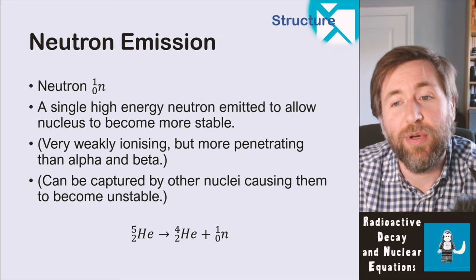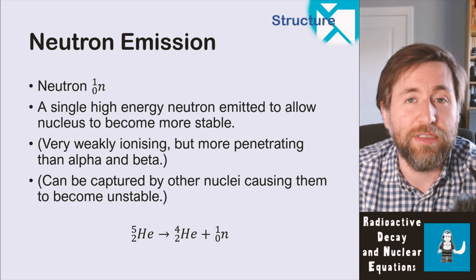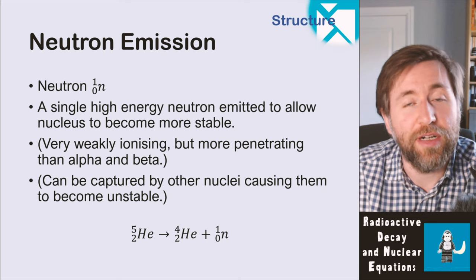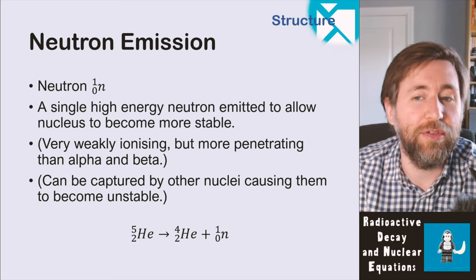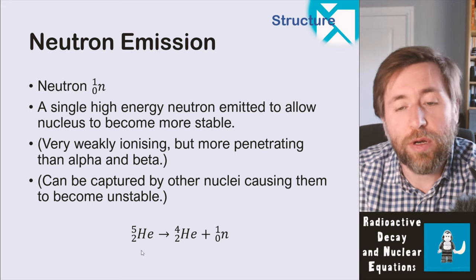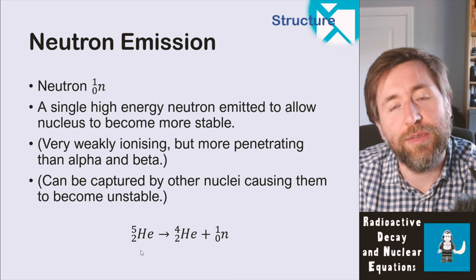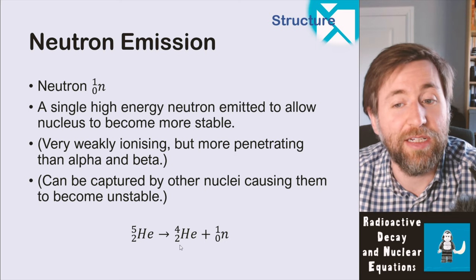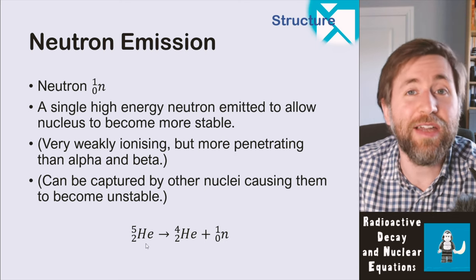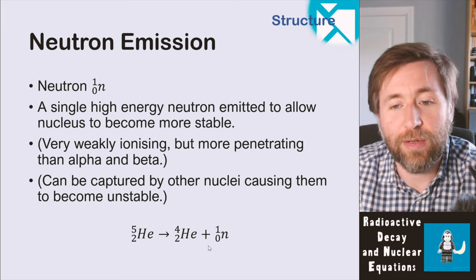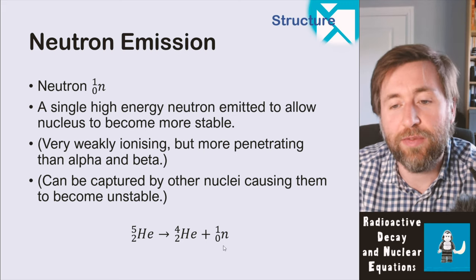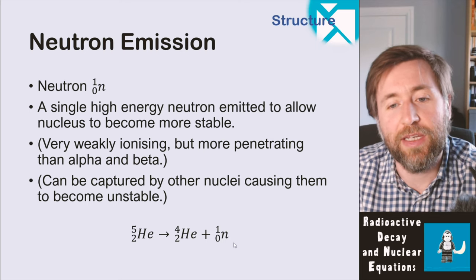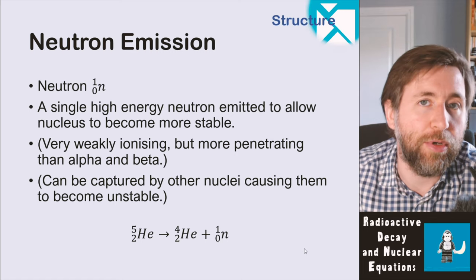Neutron emission is very weakly ionizing but more penetrating than alpha and beta, though not as penetrating as gamma. It can cause ionizations and other effects because it can be captured by other nuclei, causing them to become unstable. One isotope that undergoes neutron emission is helium-5: it's unstable compared to helium-4, so it gets rid of one neutron and becomes helium-4 plus a neutron. You need to memorize the neutron code and make the top and bottom lines balance.